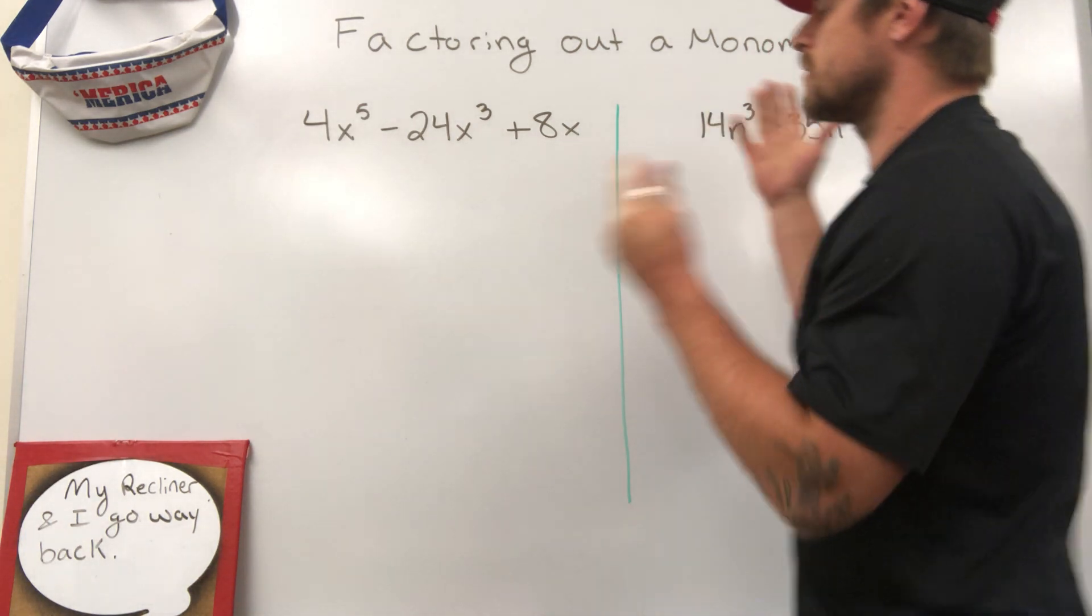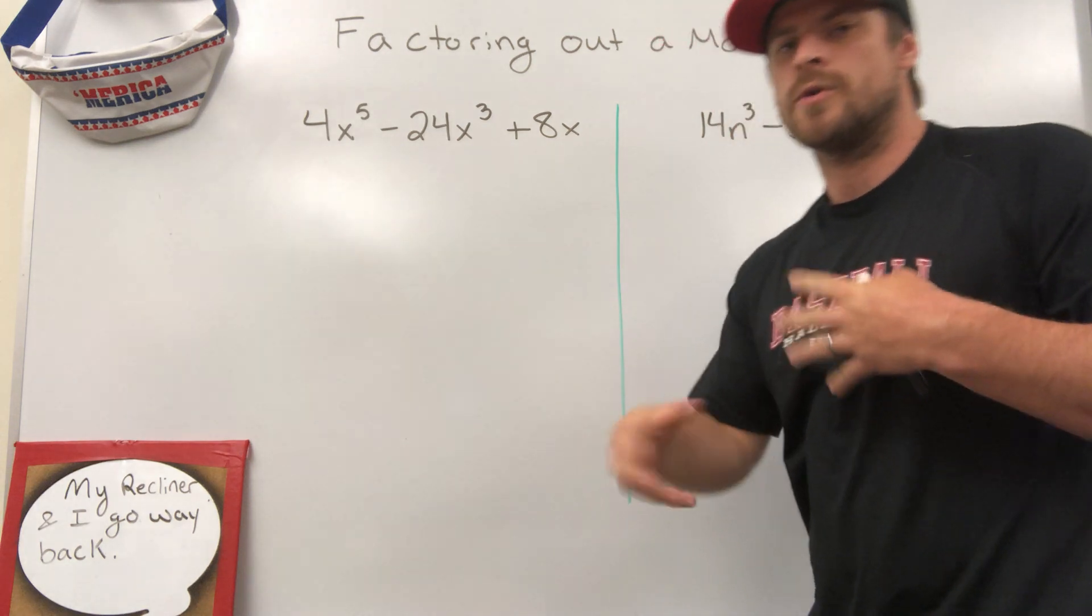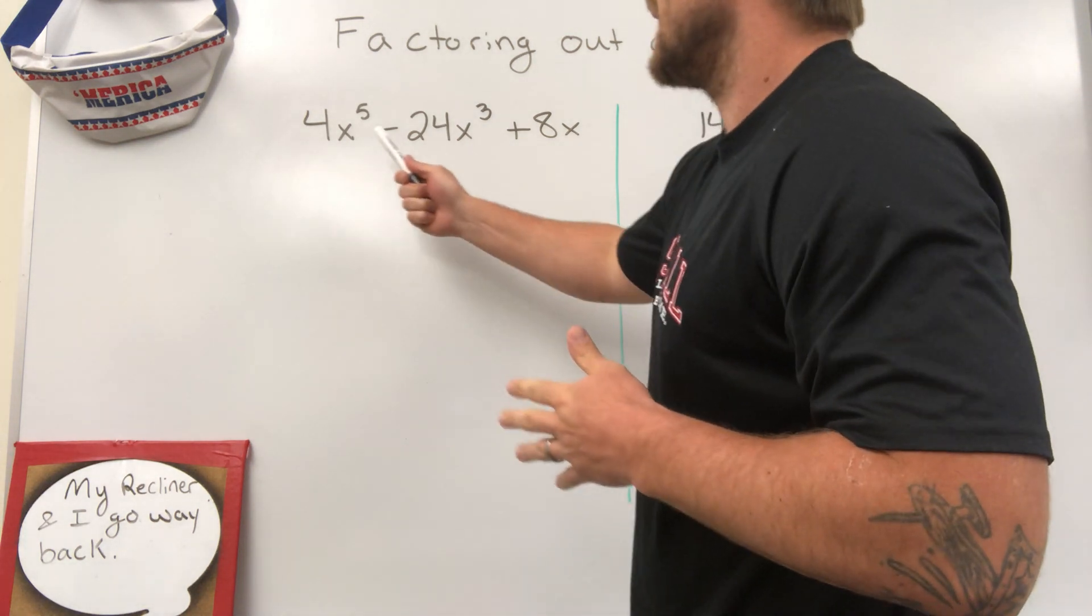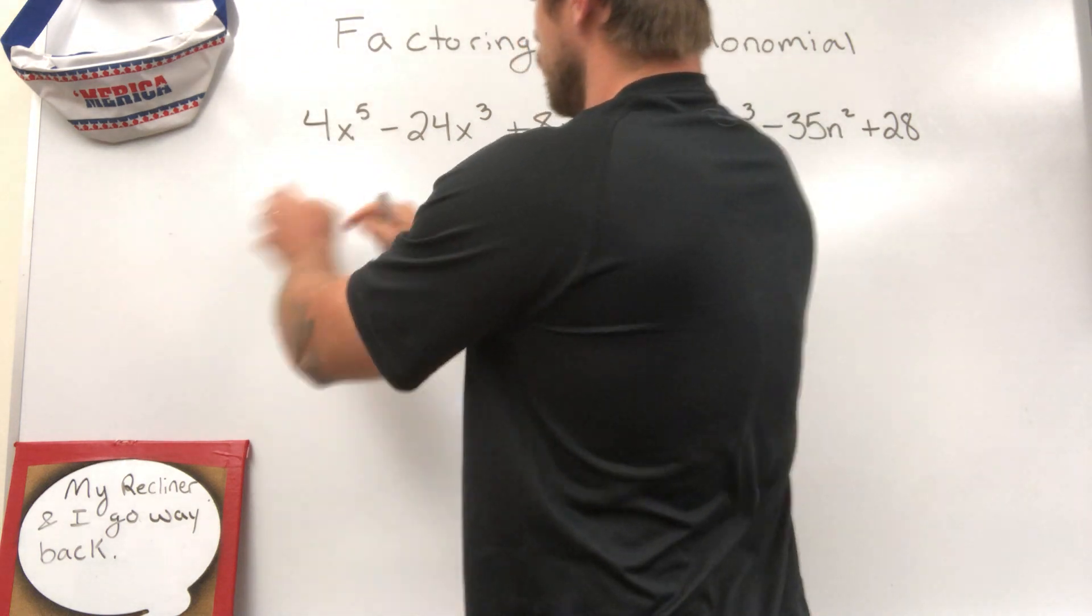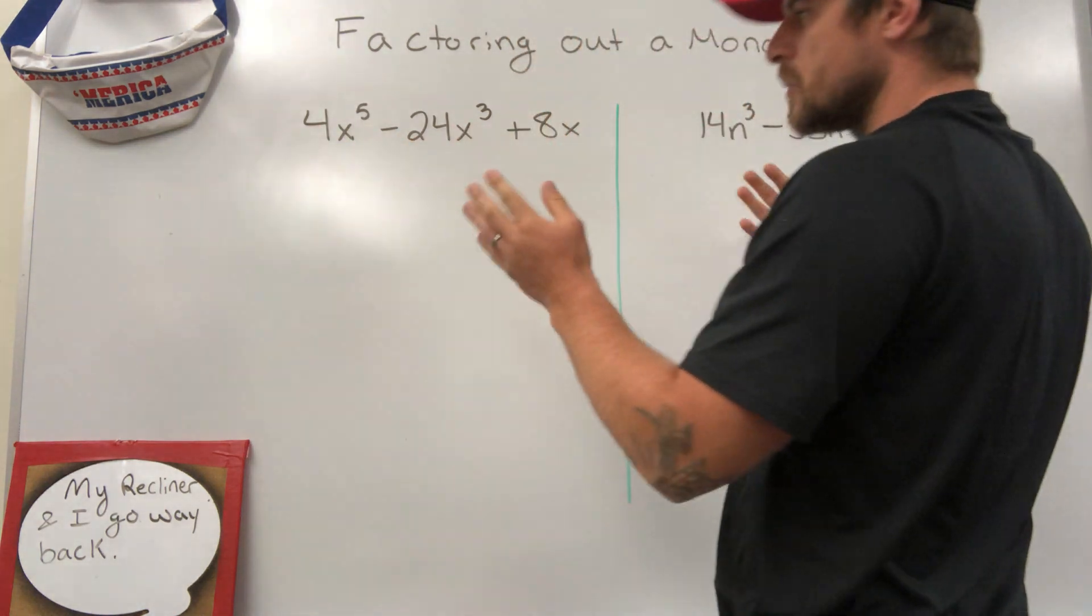First and foremost, factoring out is basically the reverse or the undoing of multiplication. So I need to pull a monomial out from this one, two, three termed trinomial.